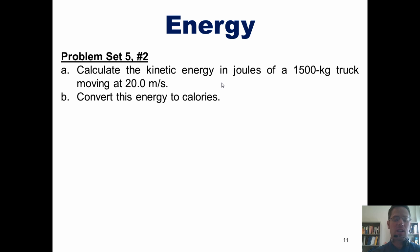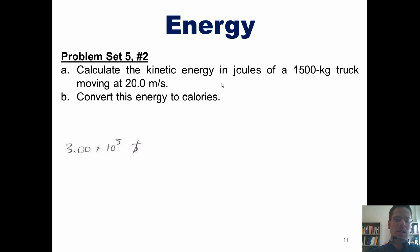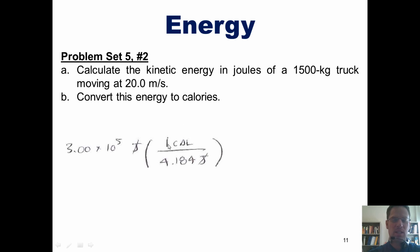In Part B, we're asked to convert this answer into calories with a lowercase c. We begin with the value we just determined: 3 times 10 to the fifth joules. We use dimensional analysis to convert to the units we want. Because joules are the units we currently have, joules go in the denominator. Since we want to get to calories, and there is a way to directly relate joules to calories, we write in the numerator that 1 calorie equals 4.84 joules.